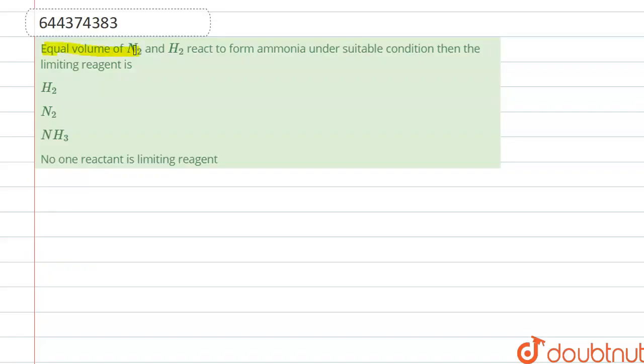Equal volumes of N2 and H2 react to form ammonia under suitable condition. Then the limiting reagent is: first is H2, second is N2, third is NH3, and fourth is no one reactant is limiting reagent. So let's see.